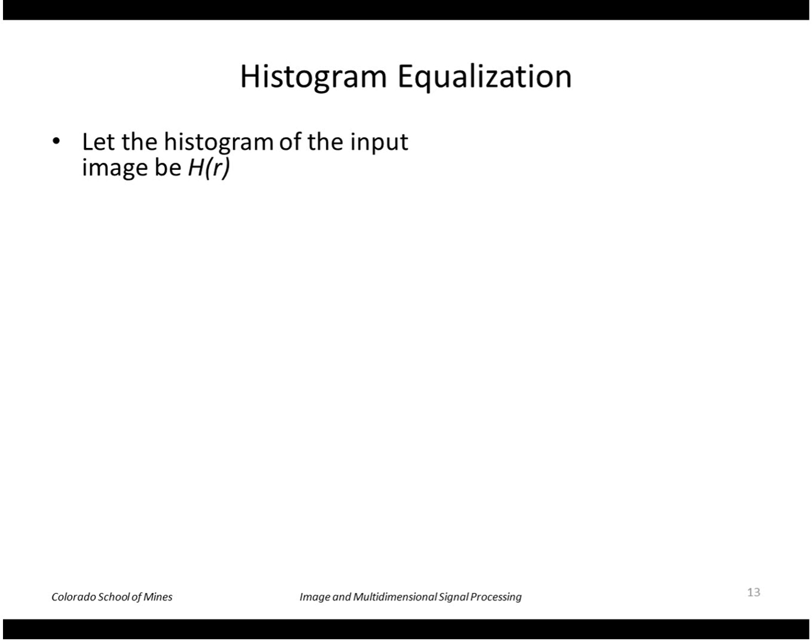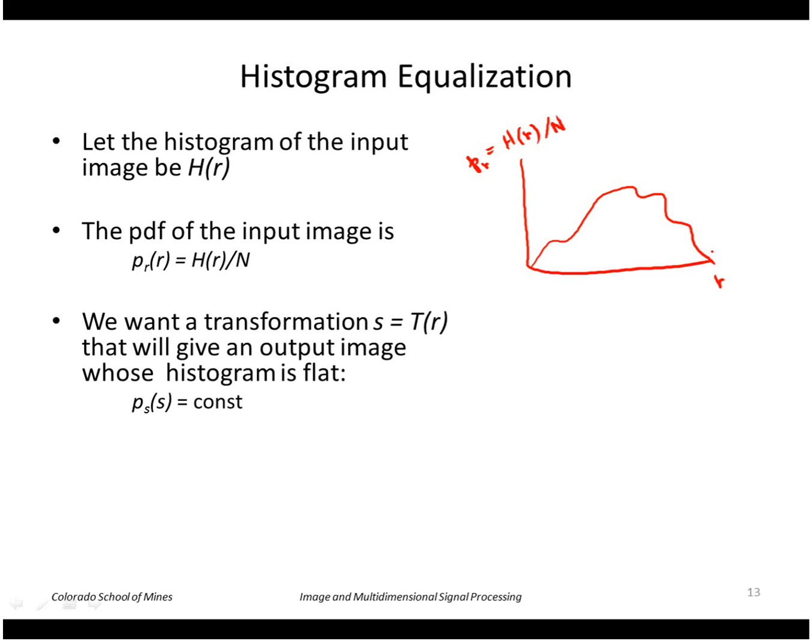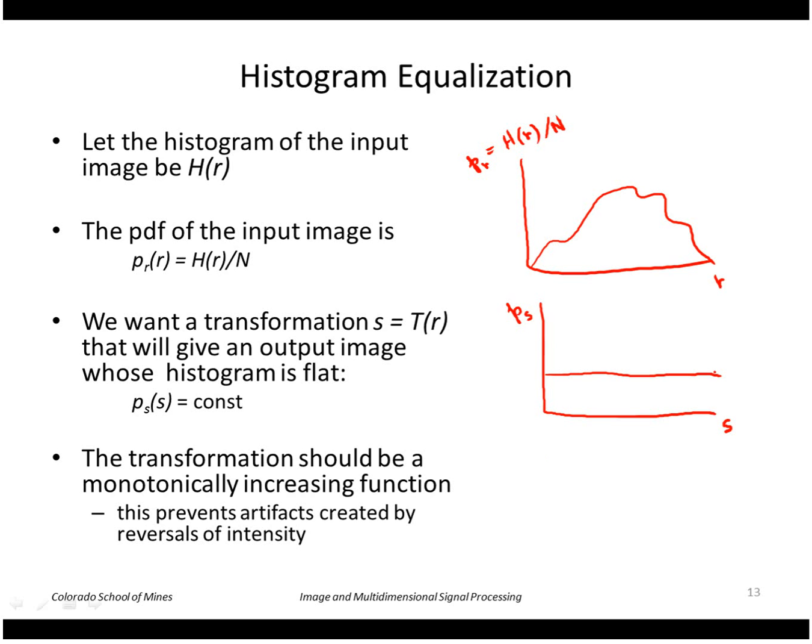So here's what we do. We let the histogram be h, some value h of r. We divide by the total number of pixels to produce p. So this might look something like this. Now we want a transformation that will yield a flat histogram on the output image. If the values of the output image are s, we want that probability to be flat. And we want to come up with a transformation function that maps r to s. Let's call it function t of r.